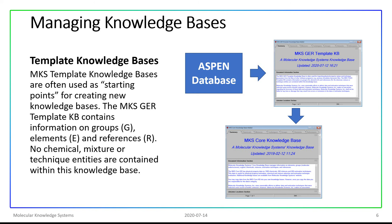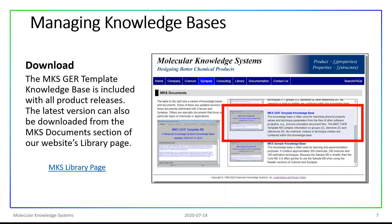An MKS template knowledge base is often used as the starting point for creating new knowledge bases. In this demonstration, we'll be using the MKS GER template knowledge base. This knowledge base contains information on groups, elements, and references. It does not contain any chemicals, mixtures, or estimation techniques. The MKS GER template knowledge base is included with the latest releases of both Cranium and Synapse, and the latest version can also be downloaded from the MKS Documents section of our website's library page.